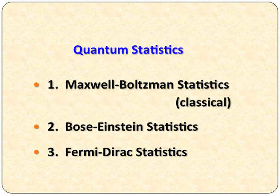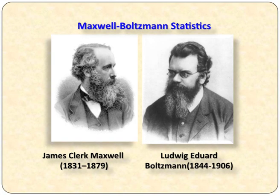To understand more about quantum statistics, it is divided into three categories: Maxwell-Boltzmann statistics, Bose-Einstein statistics, and Fermi-Dirac statistics. Maxwell-Boltzmann statistics can be considered classical. If particles obey Bose-Einstein conditions, you call it Bose-Einstein statistics. If particles obey Fermi-Dirac laws, then you call it Fermi-Dirac statistics. Bose-Einstein statistics and Fermi-Dirac statistics both obey quantum laws.